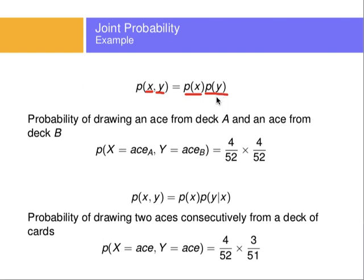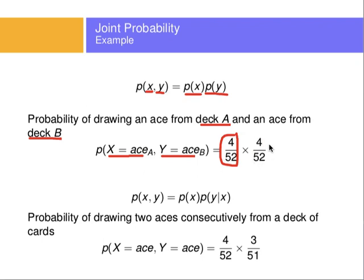Here's an example: the probability of drawing an ace from one deck of cards and an ace from another deck of cards. You have two decks of cards and take one card out of each. The probability that you get aces both times is the probability of getting an ace from deck A — which is 4 over 52, because there are 4 aces out of 52 cards — times the probability of getting an ace from deck B, which is also 4 over 52.